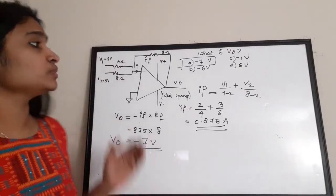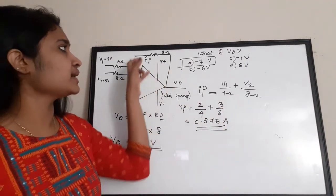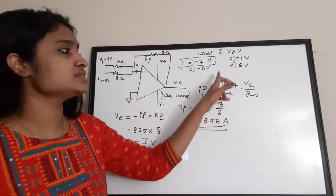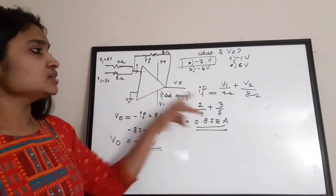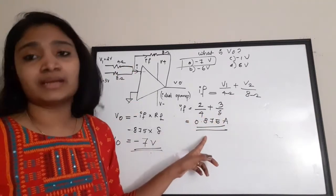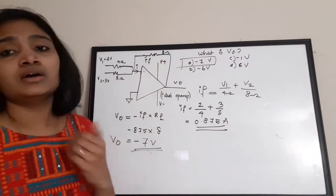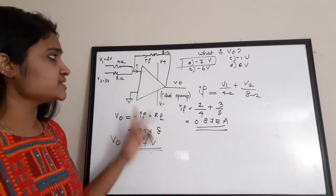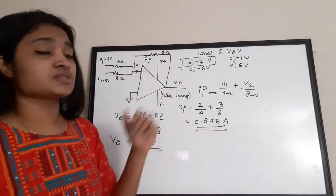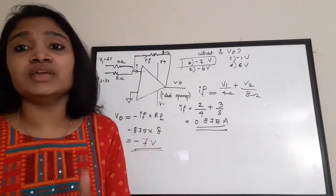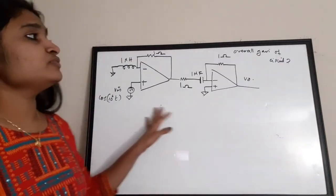To summarize: for this inverting summing amplifier, the feedback current is the sum of currents through each input resistor. Since the op-amp is ideal, no current flows into the input terminal, so all of If flows through Rf. If = 0.875 A, and Vout = −If × Rf = −7 volts.